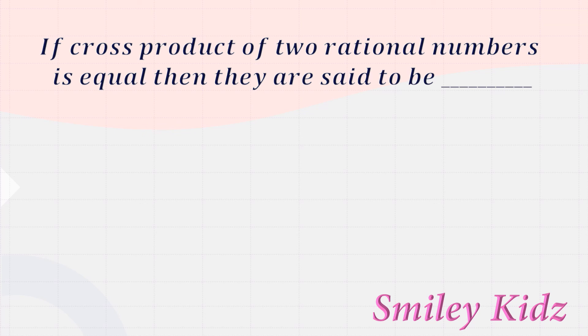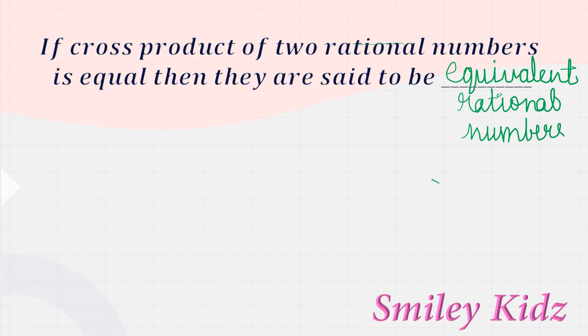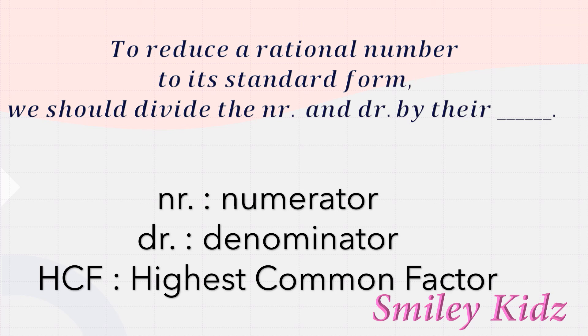Now let's check the next question: If the cross product of two rational numbers is equal, then they are said to be equivalent rational numbers. And to reduce a rational number to its standard form, we should divide the numerator and denominator by their HCF — highest common factor.